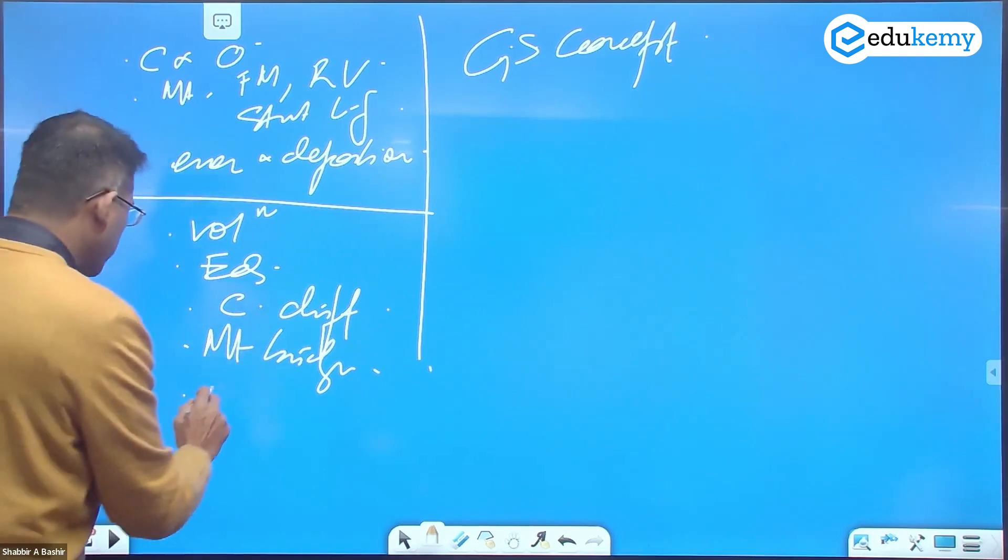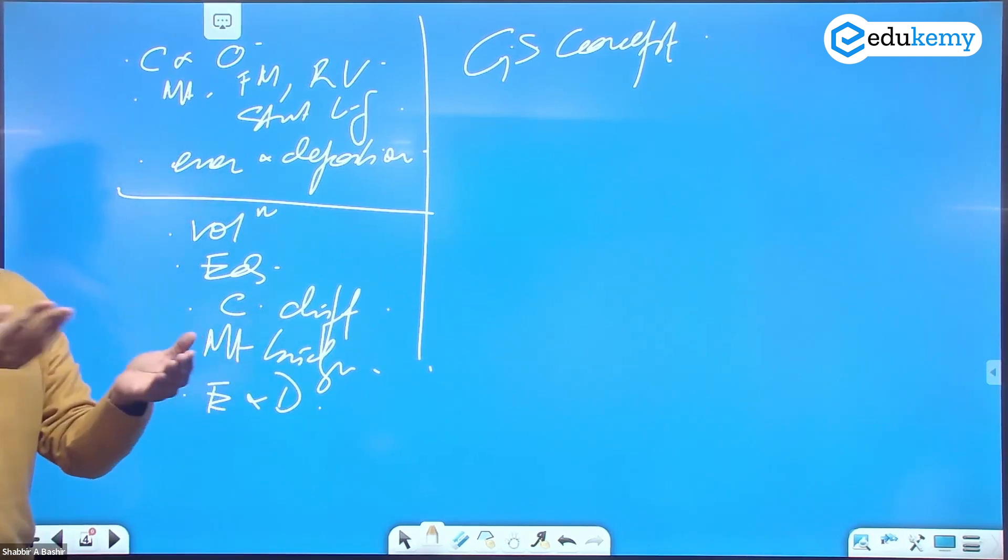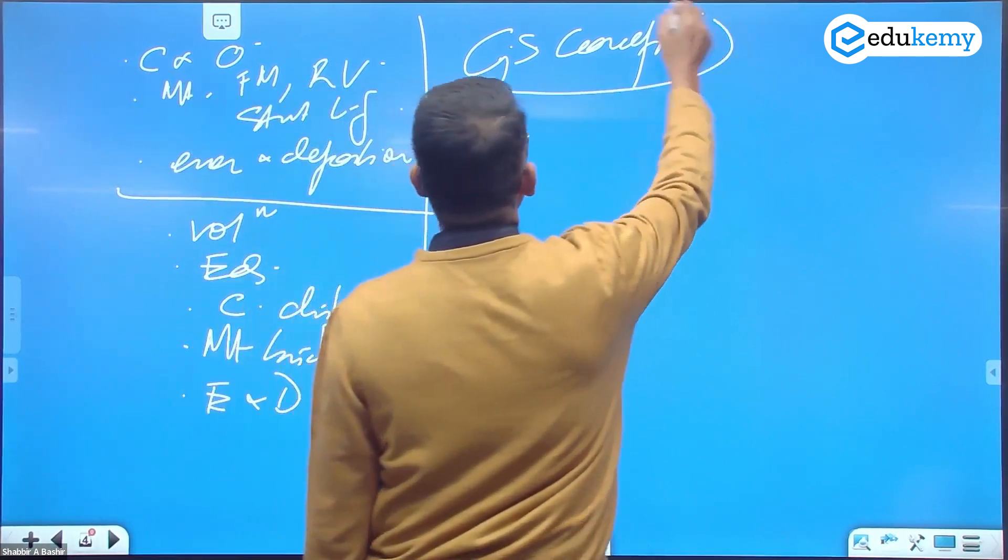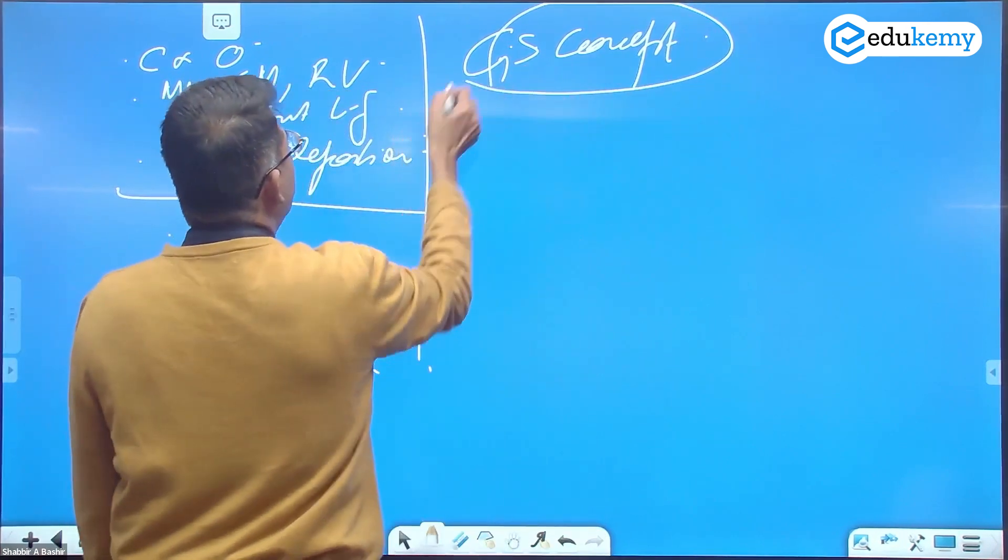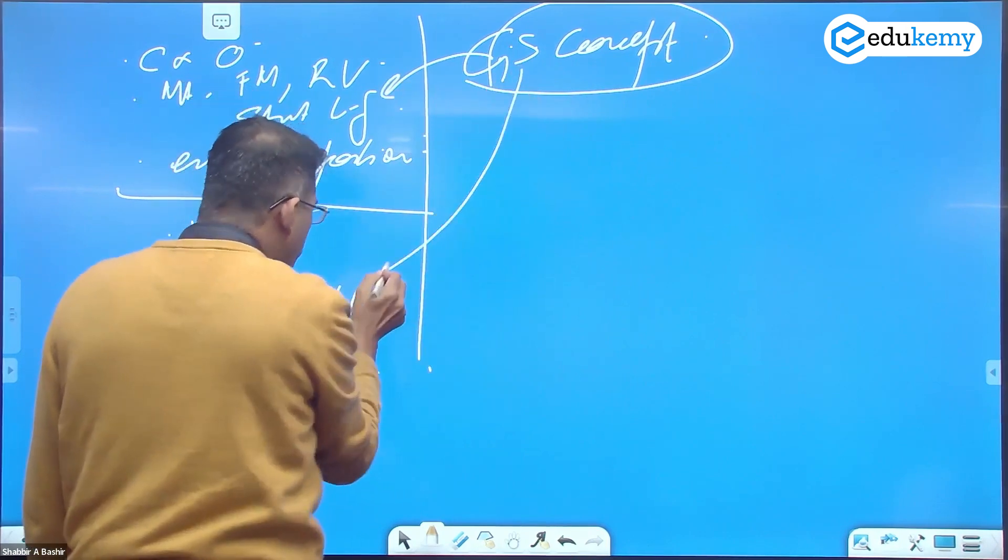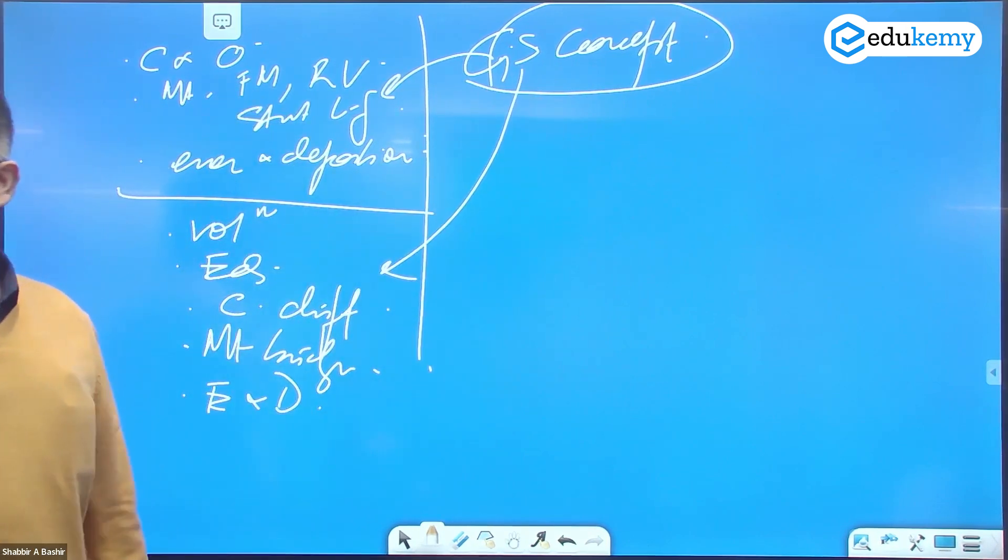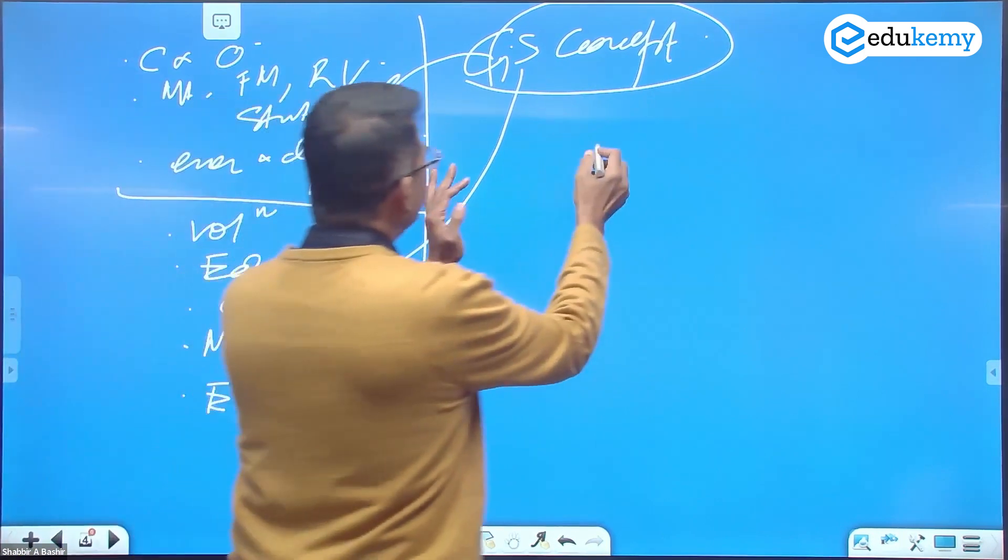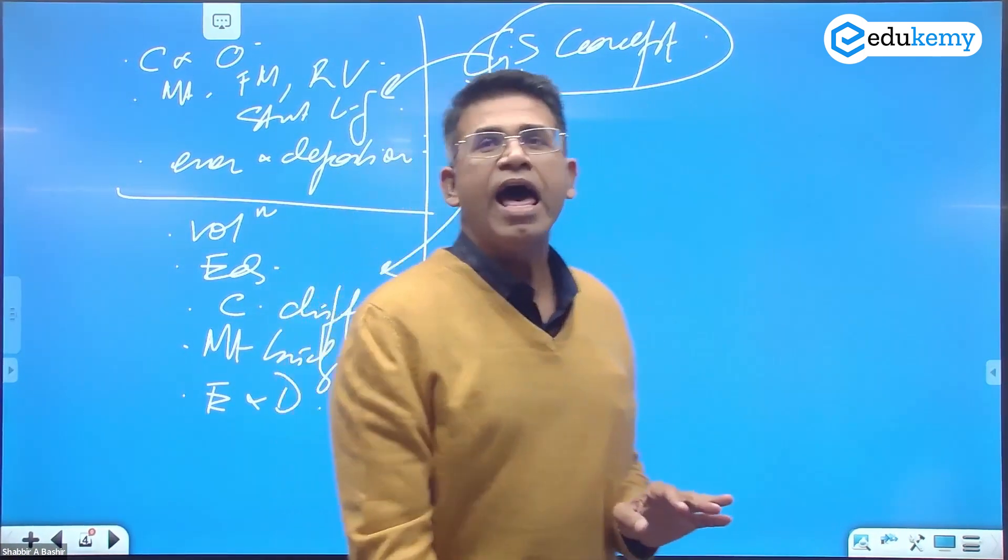Rivers have erosion and deposition processes, glaciers have erosion processes. Now I'm asking you - the geosyncline concept, how is it important for this and how important for this? So broadly, her answer...